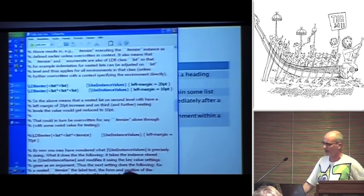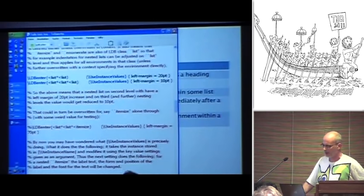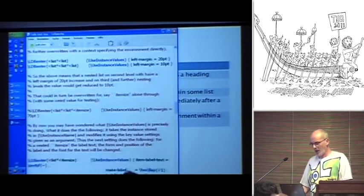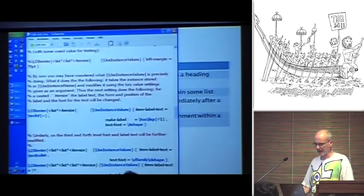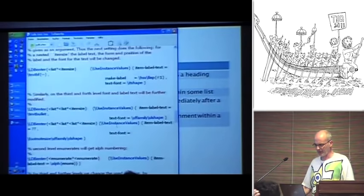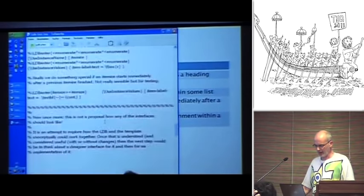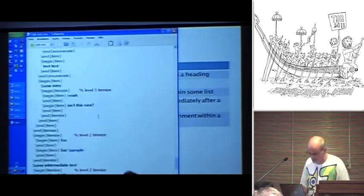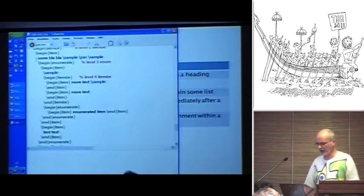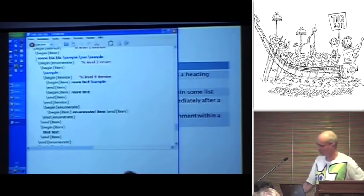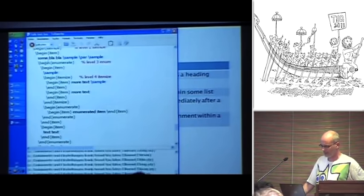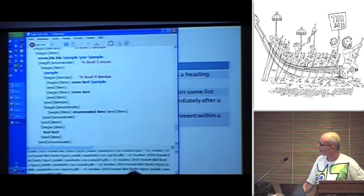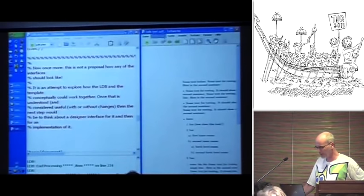This is an example of context. A list inside a list. The left margin is increased by 20%. If a third list appears, the left margin is only increased by 10%. And here's another example. Just instead of looking very long into the details, just run it for a second.